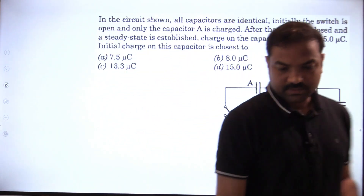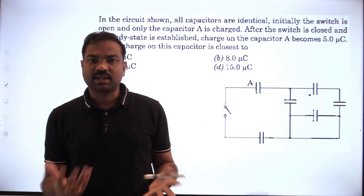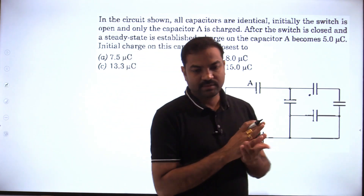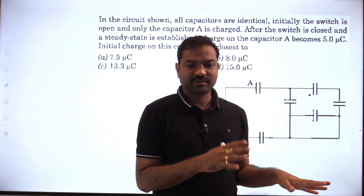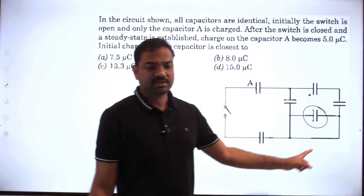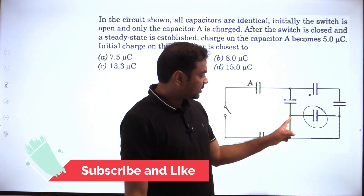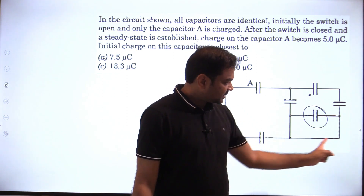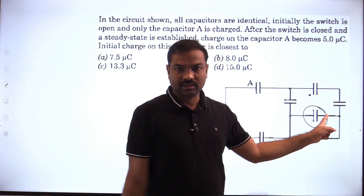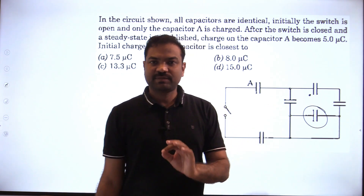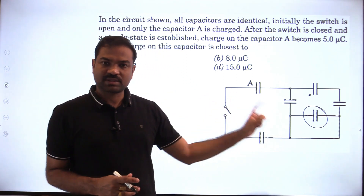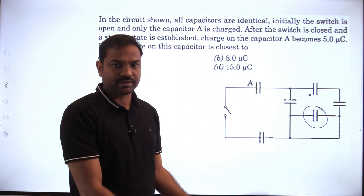This is the first question about charge distribution on capacitors. Read the question and try it. One important point to understand: this capacitor is short-circuited, so it doesn't receive any charge. Because when a conductor is connected across the capacitor, whatever the potential on one side, the same potential appears on the other side. That's why this capacitor won't receive any charge.